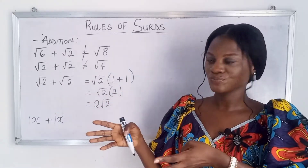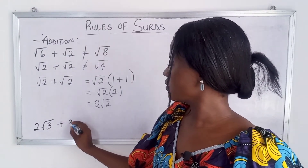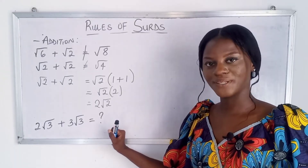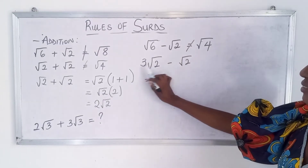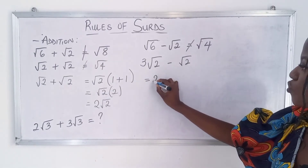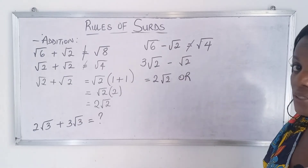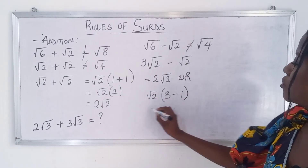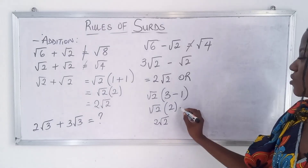Now, 2 root 3 plus 3 root 3 — let me know your answer in the comments below. For 3 root 2 minus root 2, you deal with the values outside: 3 minus 1 equals 2, so the answer is 2 root 2. Alternatively, root 2 is common — what's left is 3 and 1, so root 2 times (3 minus 1) gives 2 root 2.